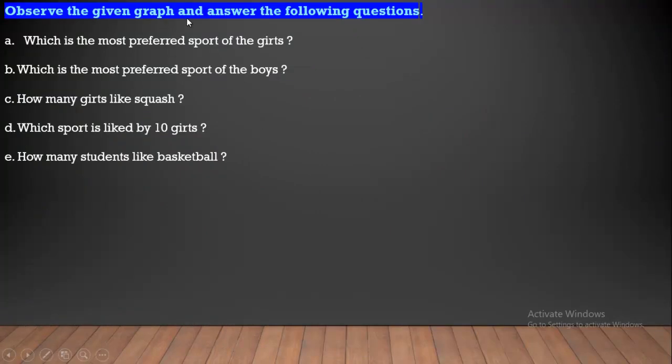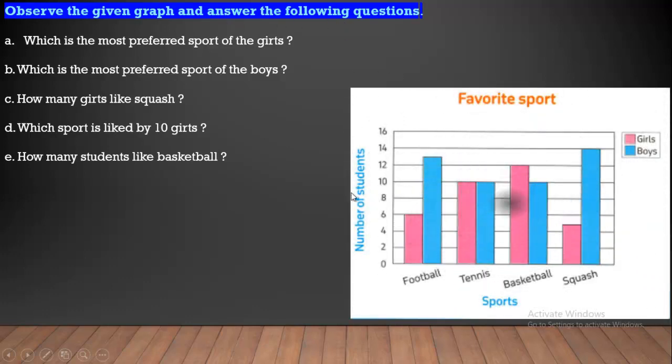Observe the given graph and answer the following question. We have a graph here. Which is the most preferred sport of the girls? We have girls here, pink and boys like blue. We have the highest one here. The highest one is basketball. Which is the most preferred sport of the girls? We have basketball.